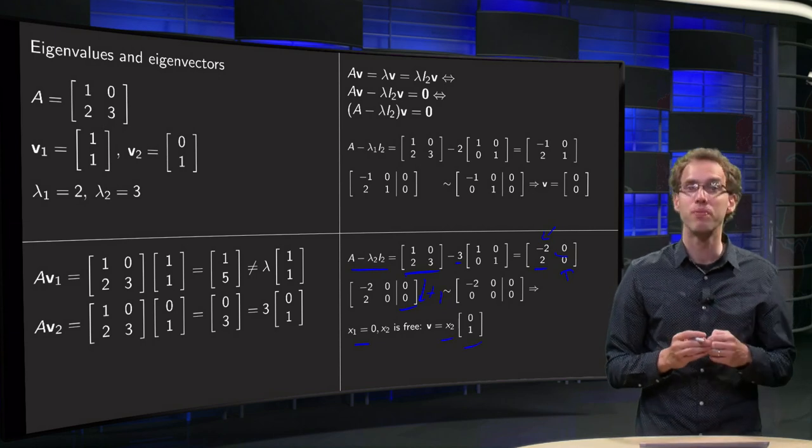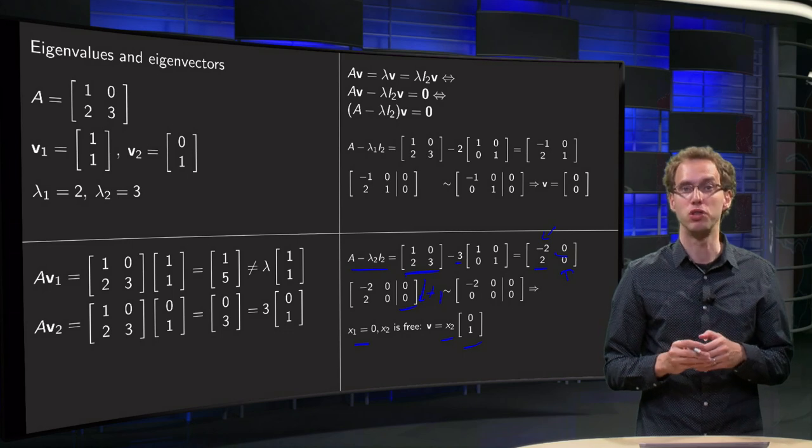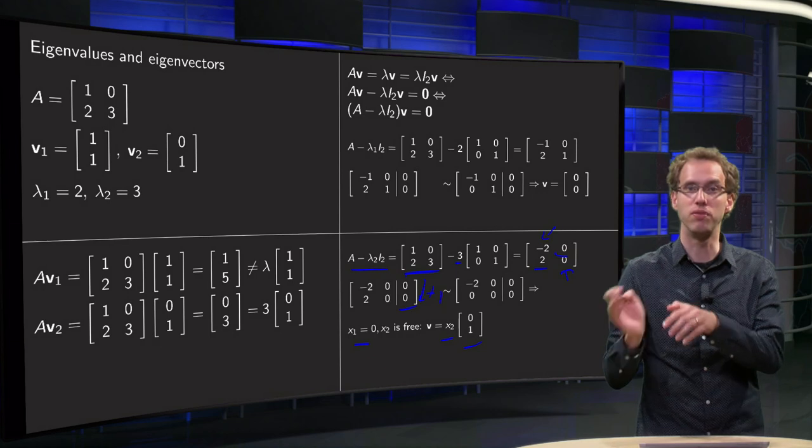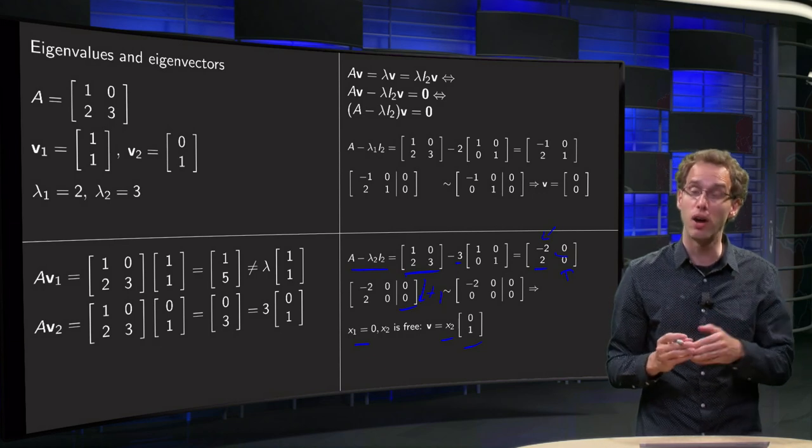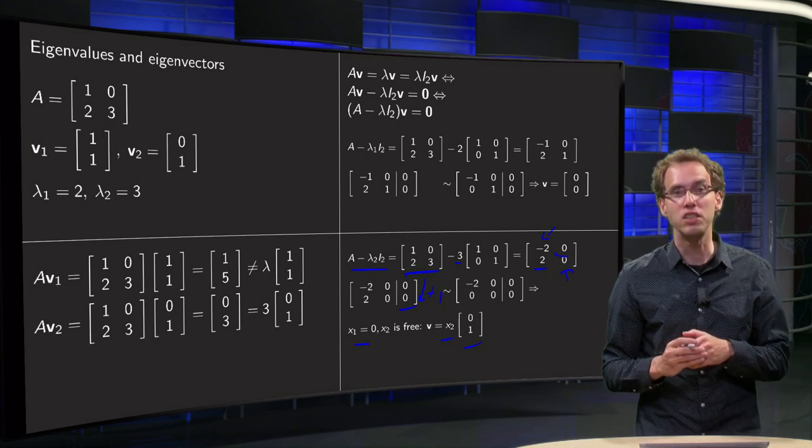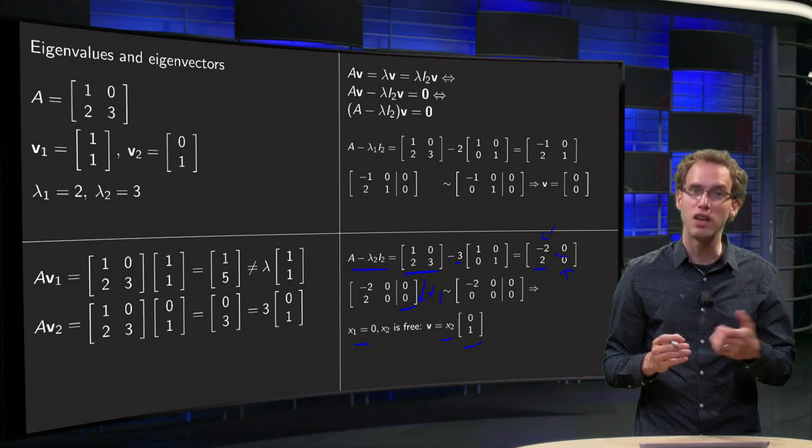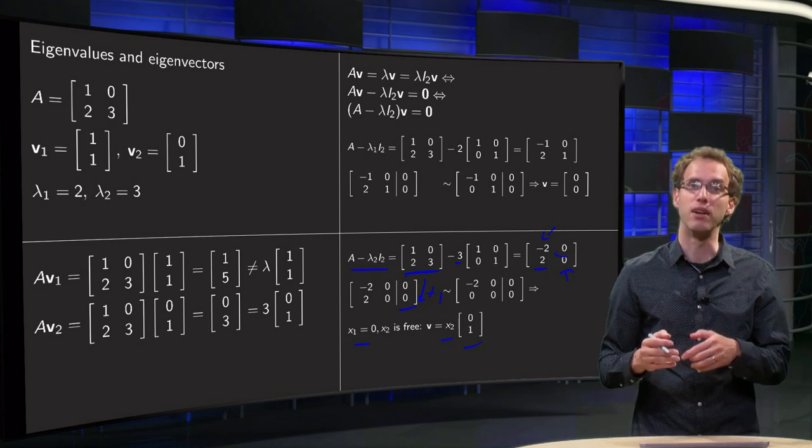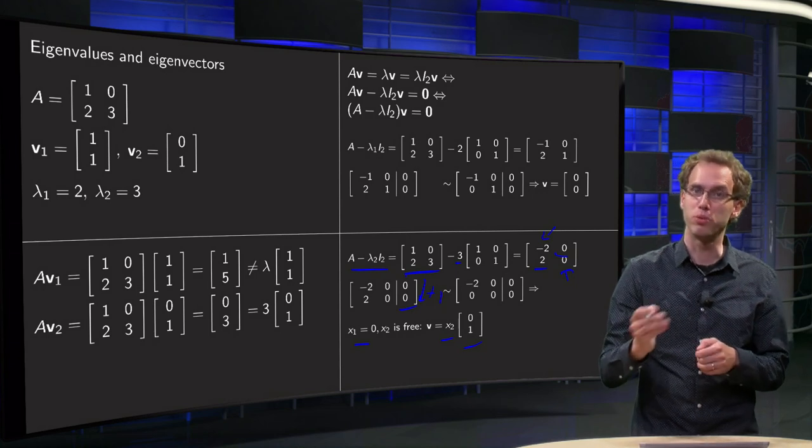And now we see that we have non-trivial solutions of this problem. So we have vectors v such that A times v equals lambda times v where v is not the zero vector. That means that this lambda is in fact an eigenvalue of the matrix A and corresponding eigenvectors are all multiples of [0; 1].